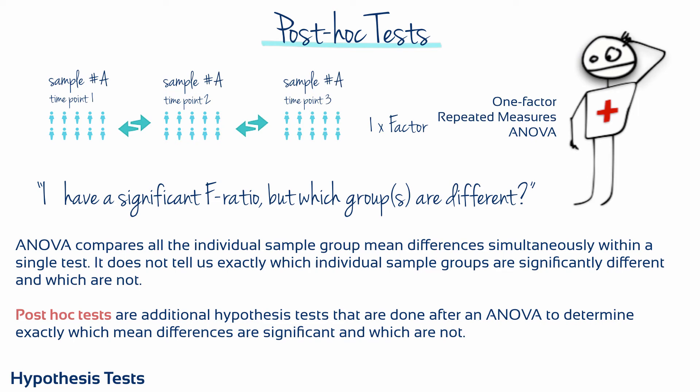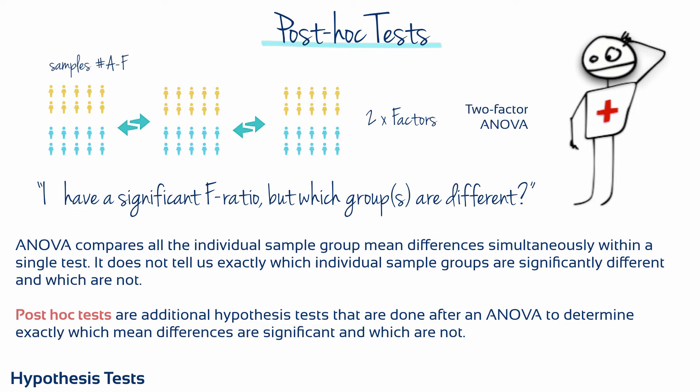ANOVA compares all the individual sample group mean differences simultaneously within a single test. Unfortunately, when you obtain a significant F-ratio and therefore fail to accept the null hypothesis, it simply indicates that somewhere among the entire set of mean differences there's at least one that's statistically significant. The overall F-ratio only tells you that a significant difference exists — it does not tell you exactly which individual sample groups are significantly different and which are not. Post-hoc tests are additional hypothesis tests done after an ANOVA to determine exactly which mean differences are significant and which are not.